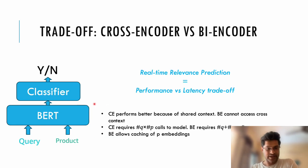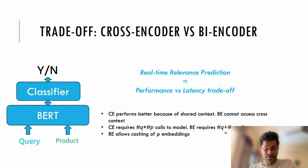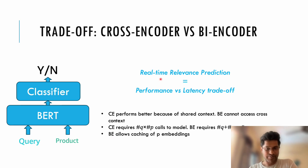Because of cross-shared representation in cross-encoders, it performs better than bi-encoders, but it comes at a very high inference cost compared to bi-encoders. Whereas bi-encoders allow caching of product embeddings. Hence, bi-encoders are preferred over cross-encoders in real-time relevance prediction applications.